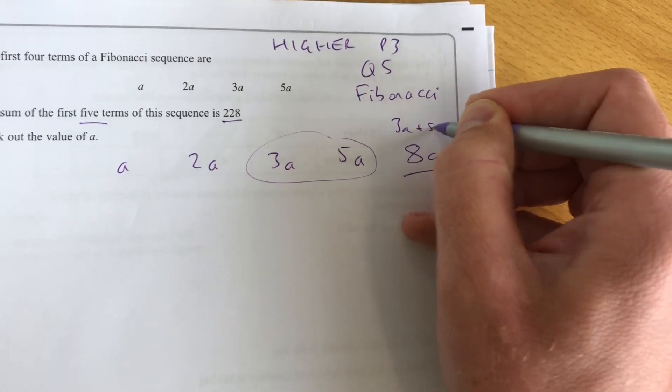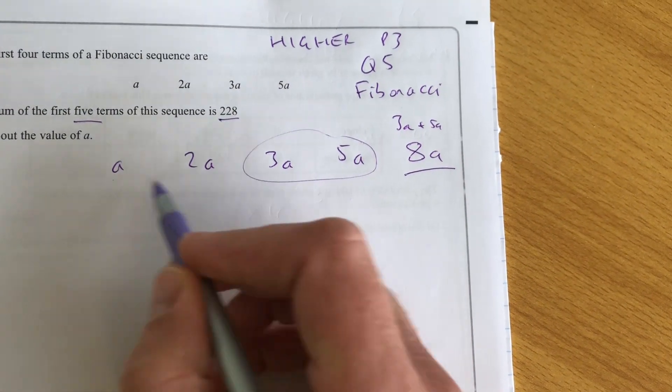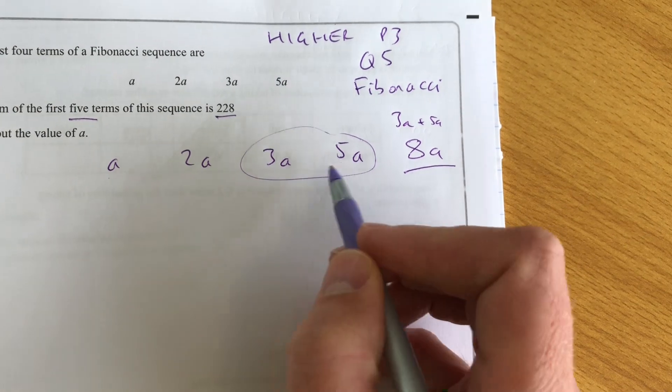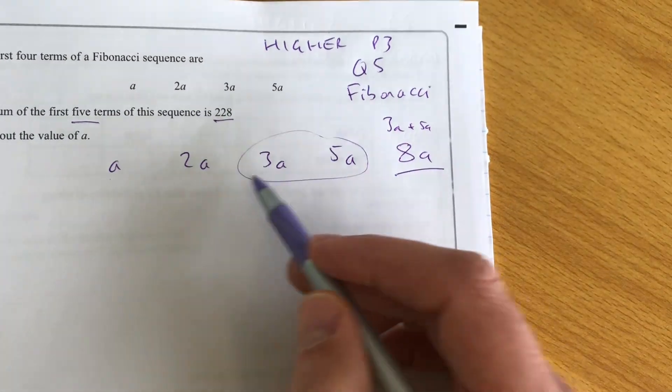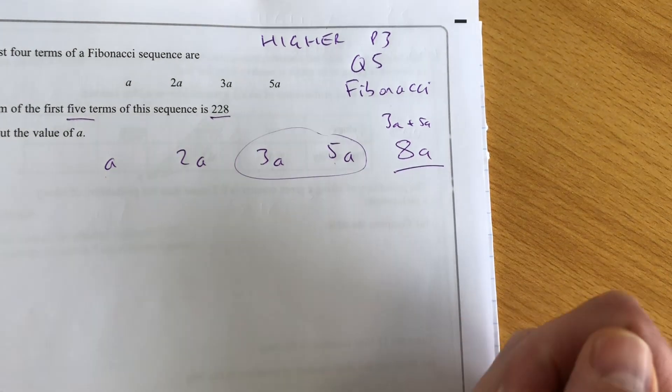Okay, so do 3A plus 5A. Okay, so Fibonacci: 1 plus 2 is 3, 2 plus 3 is 5, 5 plus... Oh, yeah, if I was going on. 2 plus 3 is 5, 3 plus 5 is 8.